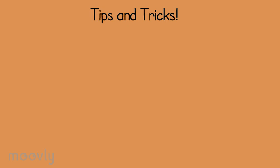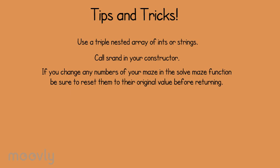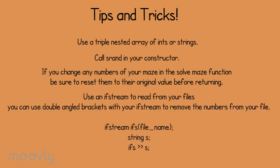Part 3: Tips and tricks. Use a triple nested array of ints or strings. Call srand in your constructor. If you change any number in your maze in the solveMaze function, like we do in the example above, be sure to reset them to their original value before returning. Use an ifstream to read from your files. You can use double angled brackets with your ifstream to remove the numbers in your file.